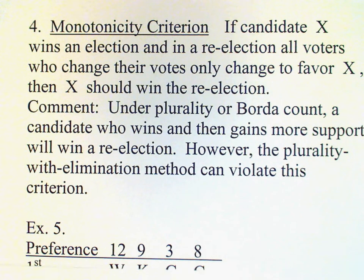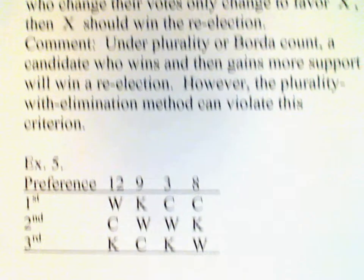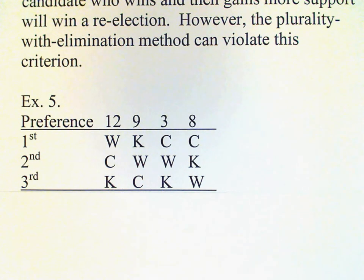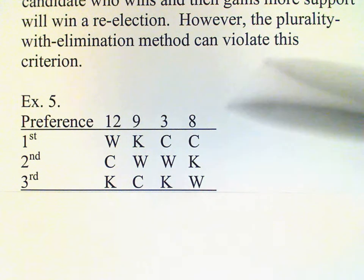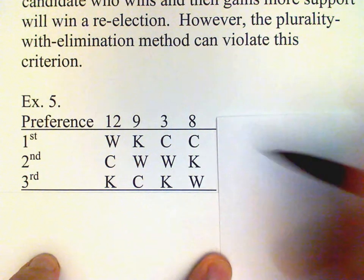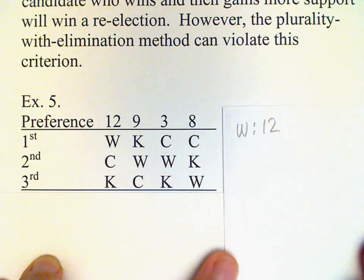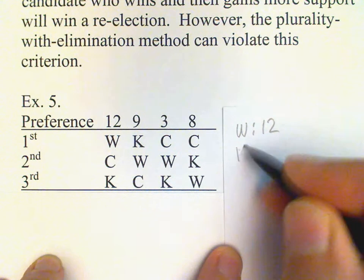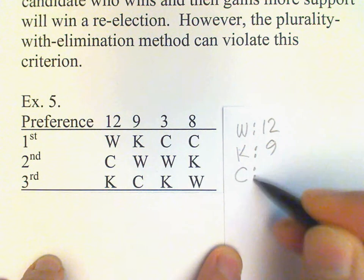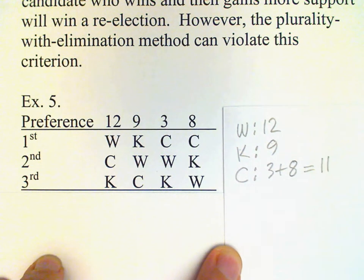Let's see an example of how that might happen. We have an election with three candidates: W, K, and C — let's say this is for president of a student council. Here is the preference table; the method used will be plurality with elimination. Looking at only the top row: W has 12, K has 9, and C has 3 plus 8, which is 11.